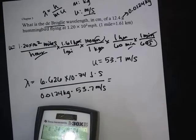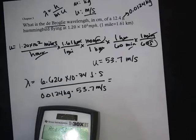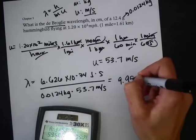At the end of the day, if I do it this way, I'm going to get a wavelength in meters. I'll put the numbers in my calculator and I get 9.95 times 10 to the minus 34th meters. It actually asks for centimeters.